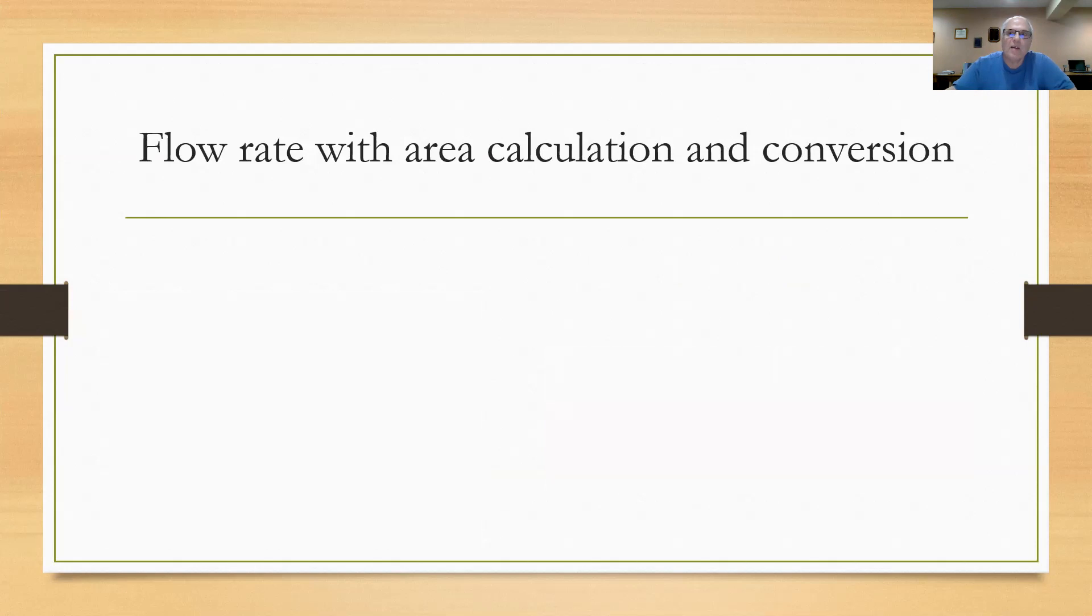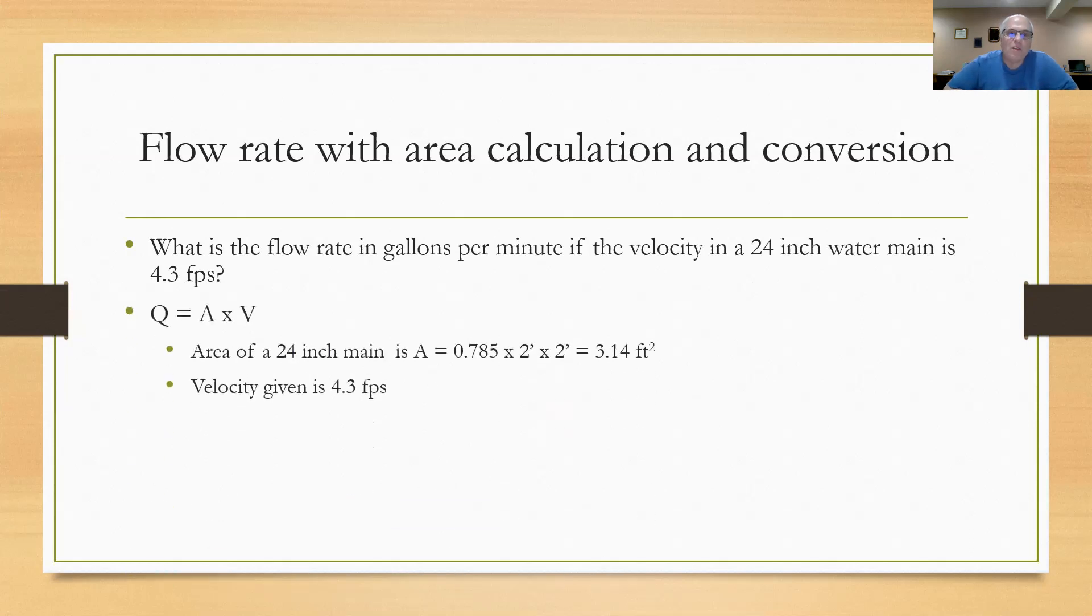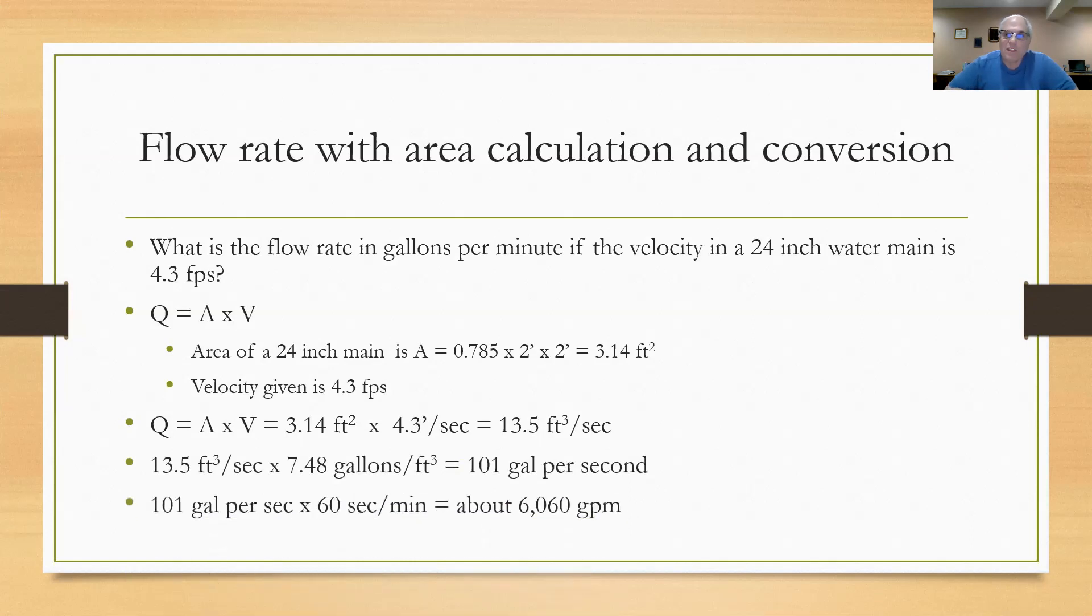Here's a flow rate conversion where I've got to calculate the area and then convert. What's the flow rate in gallons per minute if the velocity in a 24-inch water main is 4.3 feet per second? Using Q equals A times V, I calculate the area of the 24-inch main by multiplying 0.785 times the diameter squared. It's a two-foot diameter, so I multiply 2 times 2, coming up with 3.14 square feet. With velocity at 4.3 feet per second, I multiply 3.14 square feet times 4.3 feet per second and get 13.5 cubic feet per second. I had to calculate the area first, then multiply by velocity. To change cubic feet per second to gallons per minute, I take 13.5 and multiply by 7.48, getting 101 gallons per second. Then multiply by 60 to get approximately 6,060 gallons per minute.